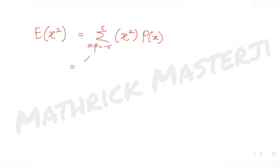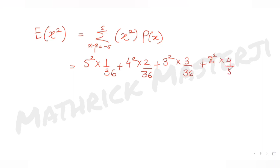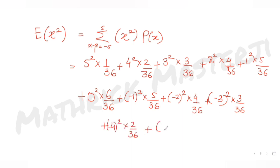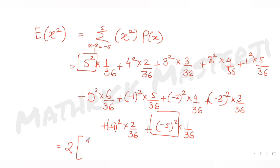Continuing the E[X²] calculation: 4² × (2/36), 3² × (3/36), 2² × (4/36), 1² × (5/36), 0² × (6/36) which is zero, then (-1)² × (5/36), (-2)² × (4/36), (-3)² × (3/36), (-4)² × (2/36), and (-5)² × (1/36).